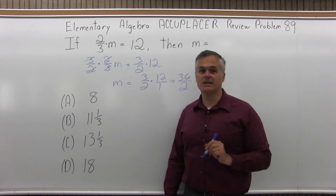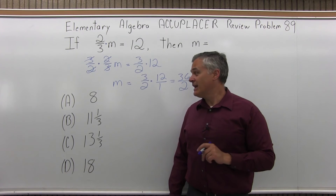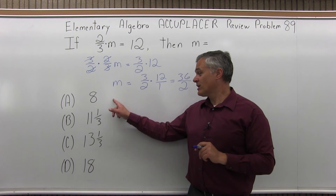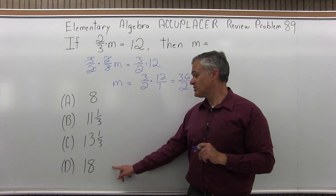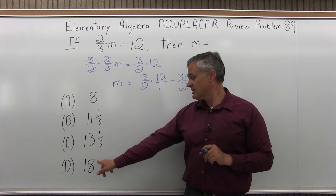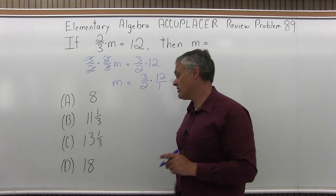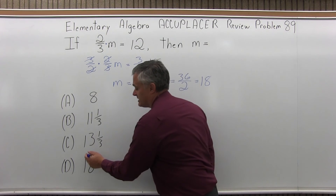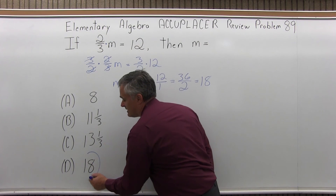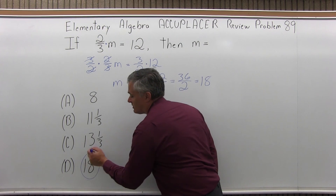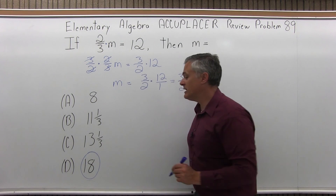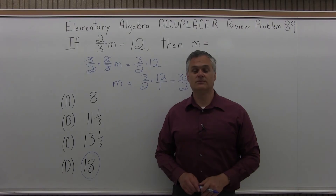I have m equals eighteen. As I look at my list of potential answers, eighteen is one of the options — it's option D. So the answer for number eighty-nine is option D.